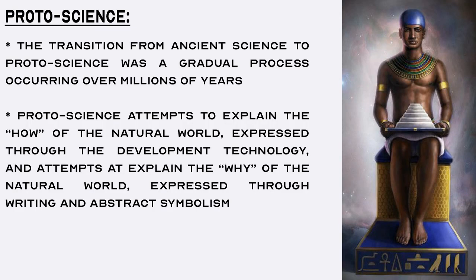Proto-science. The transition from the ancient science of archaic and early human ancestors to the proto-science of Homo sapiens was a gradual process which occurred over millions of years of human evolution. Proto-science is distinguished in that, in addition to explaining the how of the natural world through tools and technology, it also involved attempts at explaining the why of the natural world, expressed through the invention of writing starting around 3000 BC. The evolution of science is linked to the evolution of human cognition. As humans evolved to think abstractly and symbolically, so did our abilities to express knowledge about the natural world. In proto-science, mythology, allegory, and mathematics are methods of abstract symbolic thought used to express knowledge about the natural world. Since knowledge acquisition was necessary for survival, this activity was considered highly important, or sacred.